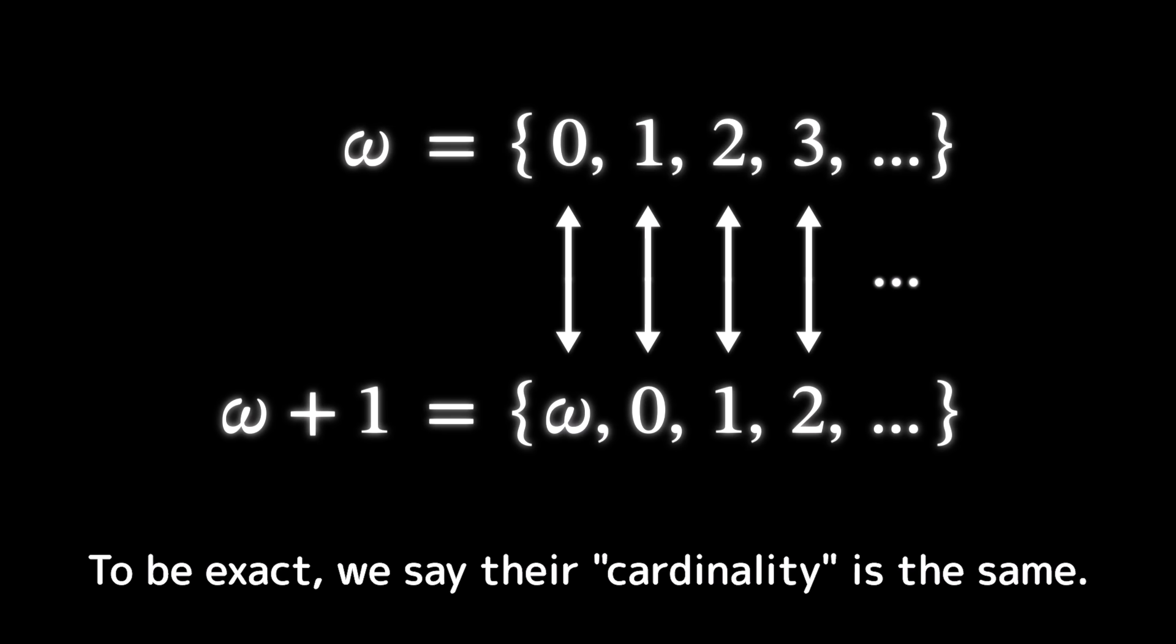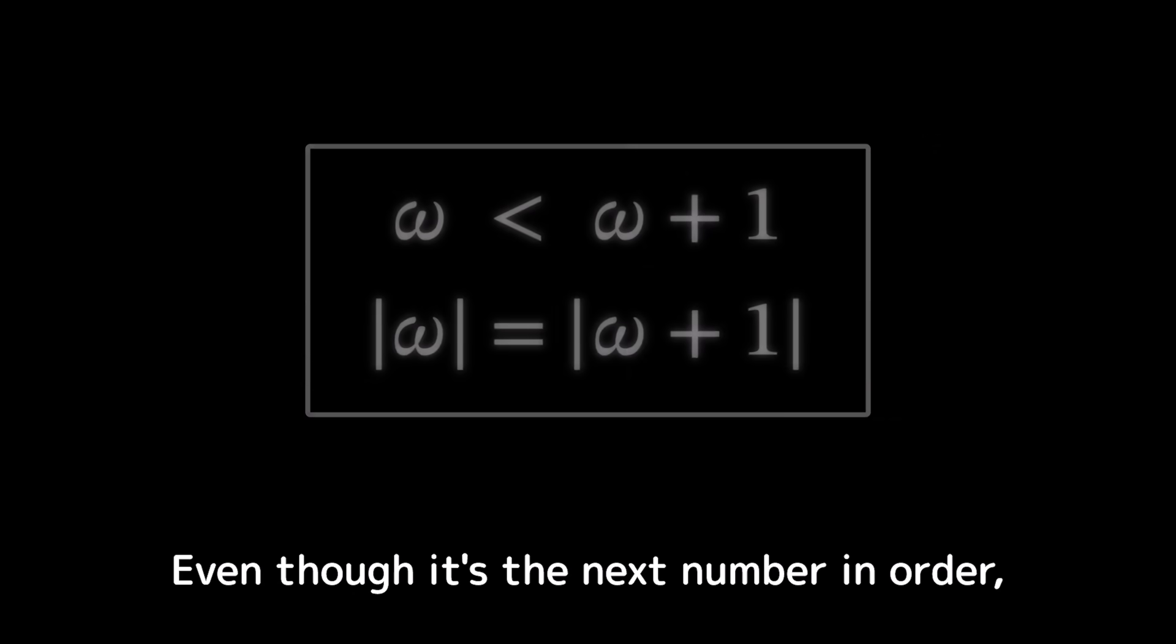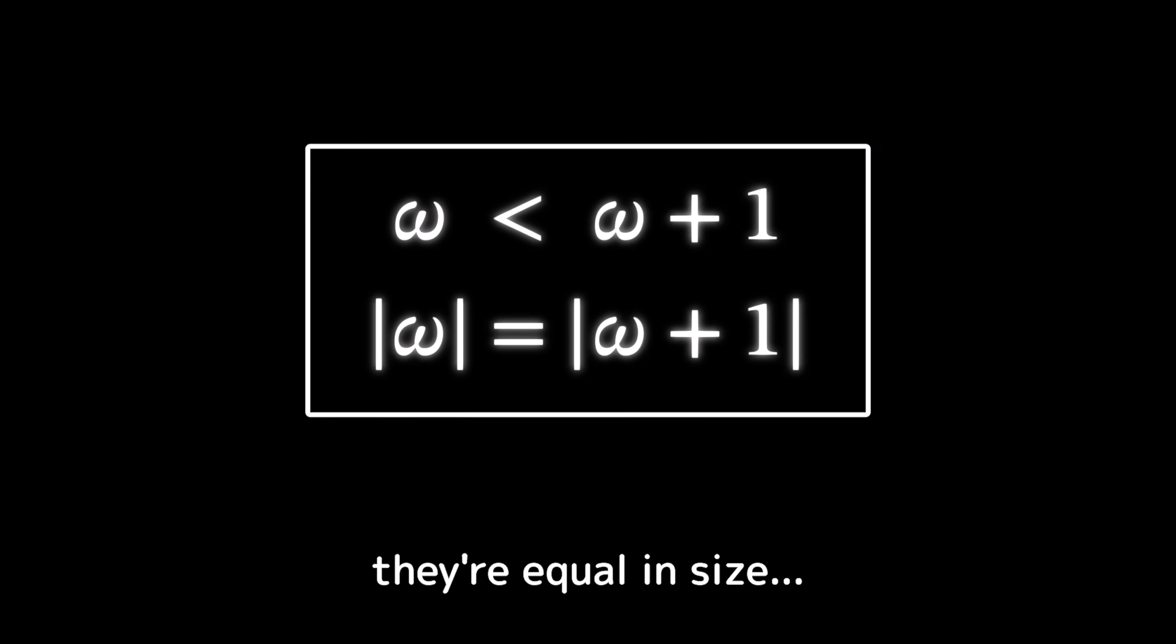So omega and omega plus one have the same number of elements. To be exact, we say their cardinality is the same. Even though it's the next number in order, they're equal in size. Strange things happen in the world of infinity.